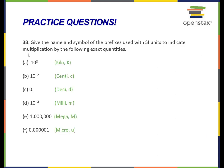Ten to the third, that's a quantity of a thousand. That denotes kilo, which is capital K. Ten to the negative two, that is one hundredth. That denotes centi, which is lowercase c.